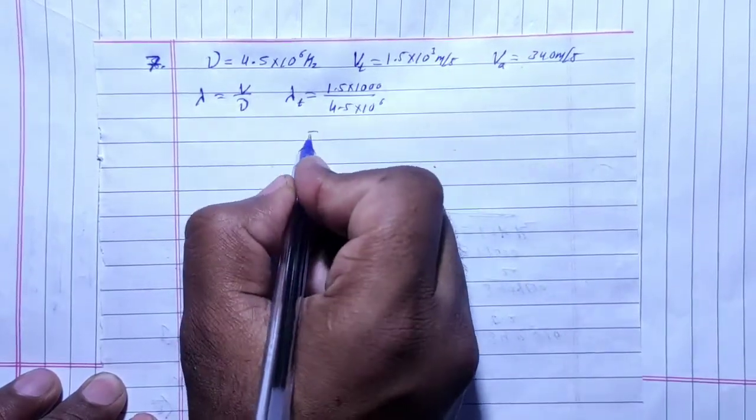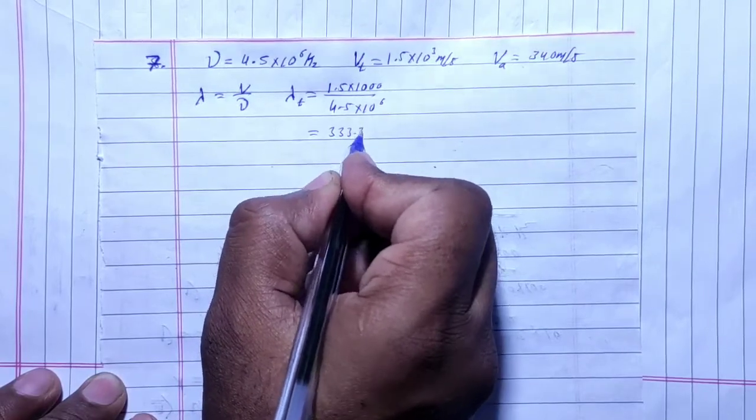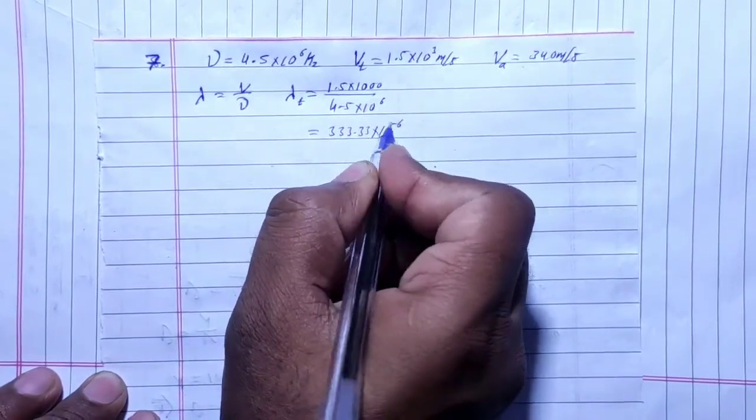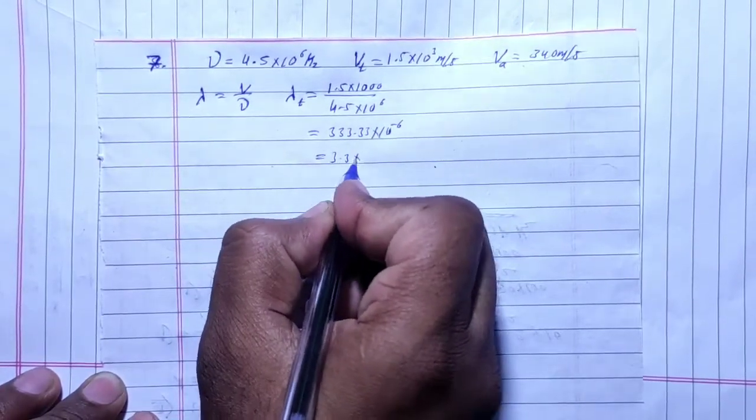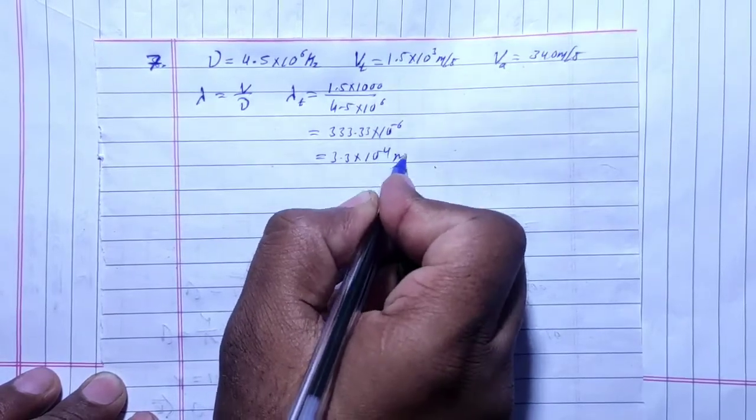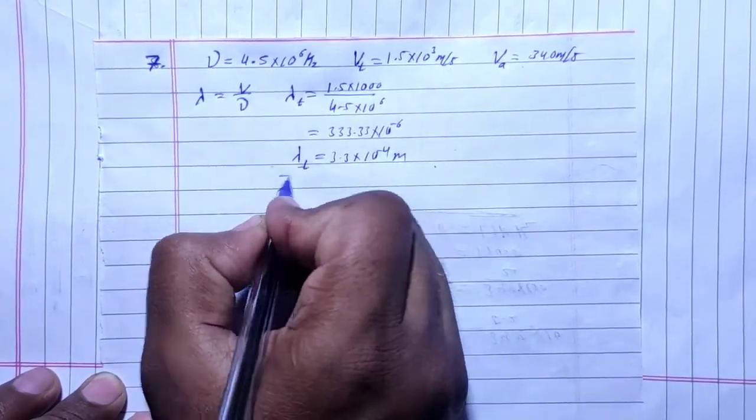Solving this gives 333.33 × 10⁻⁶ or 3.3 × 10⁻⁴ meters. This is the wavelength in tissue. Next, we calculate wavelength in air.